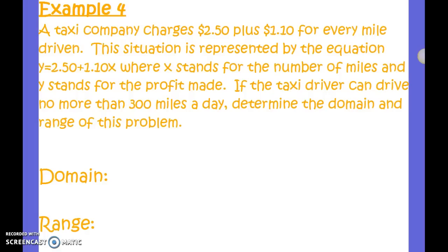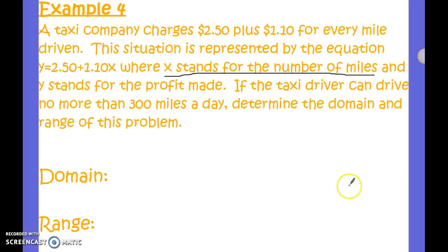The next example: a taxi company charges $2.50 plus $1.10 for every mile driven. This situation can be represented by the equation y equals 250 plus 1.10x, where x stands for the number of miles and y stands for the profit made. If the taxi driver can drive no more than 300 miles a day, we need to determine the domain and range. The x value stands for the number of miles. We have to decide if miles is continuous or discrete data — miles are measured and can be decimals, so this is continuous data.